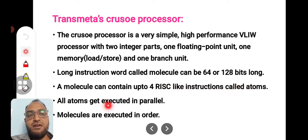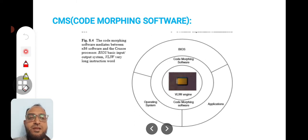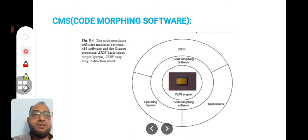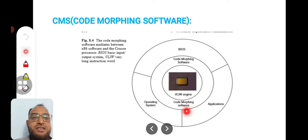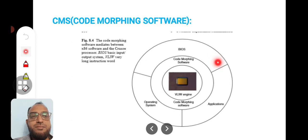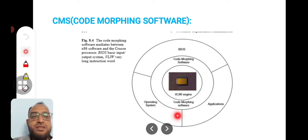These four instructions called atoms are executed in parallel, molecule by molecule, in order. The Transmeta processor depends on a software called Code Morphing Software (CMS). As you can see, the outer part is divided as an operating system application part and a BIOS part. BIOS contains the chip specifications, and the operating system layer contains the CMS software.